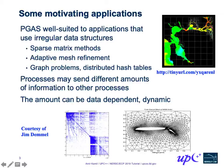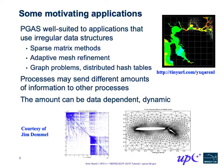Another example is adaptive mesh refinement, shown at the top right, where at certain points of the physical space there are finer levels of grids that aren't distributed uniformly, also leading to irregular communication patterns. Other applications include graph problems where you're chasing pointers across different processors, and distributed hash tables, which we'll see a simple example of later today. In these applications, processes may send different amounts of information and the timing of communication depends on input data and program evolution.